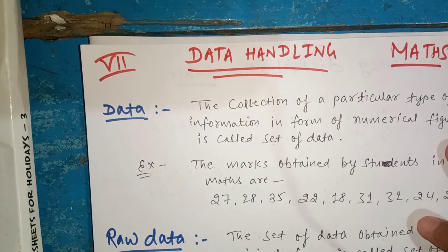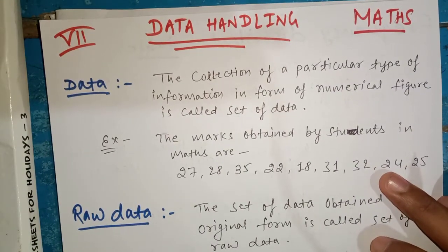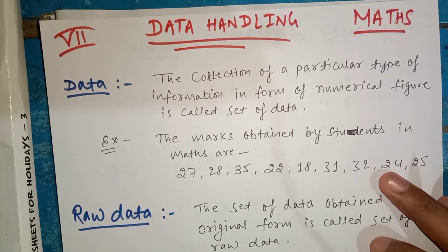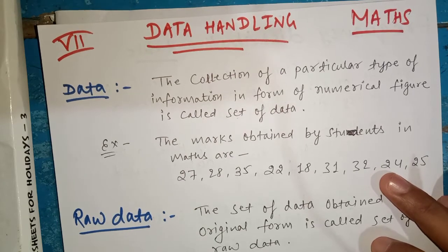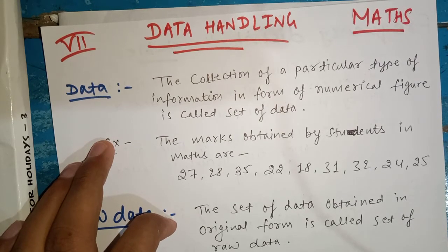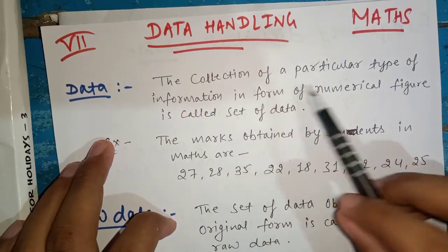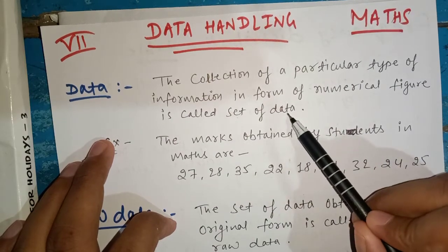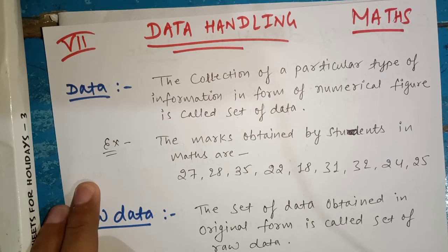The first term is data. Data ka matlab kya hota hai — suppose you have given a maths examination. If you write down the marks of all 10 or 20 students, that becomes a sort of data. Any numerical figure that is going to provide you with a particular type of information — a collection of numerical figures that gives us information about a particular thing — that is what we call data.